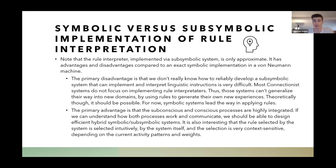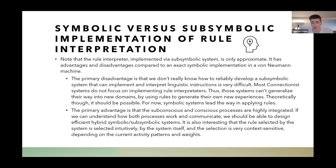Theoretically it should be possible, but for now symbolic systems lead the way in rule interpretation. The primary advantage of the connectionist approach is that the two processes are highly integrated. If we can understand how both processes work and communicate with each other, we can design an efficient hybrid symbolic and sub-symbolic system. It's also interesting that the rule selected is selected intuitively by the network itself — instead of an explicit condition for rule selection, the intuition of the network instantiates a rule naturally. Rule selection is very context-sensitive depending on current activity patterns and weights.